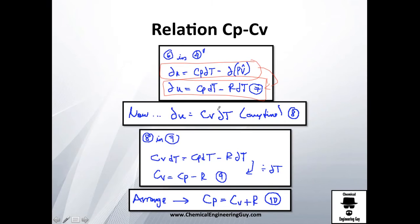Now at any time, you know that by definition the internal energy will be equal to the specific heat capacity at constant volume times the differential of temperature. Let's call it eight. And I'm going to substitute this value in equation number seven.